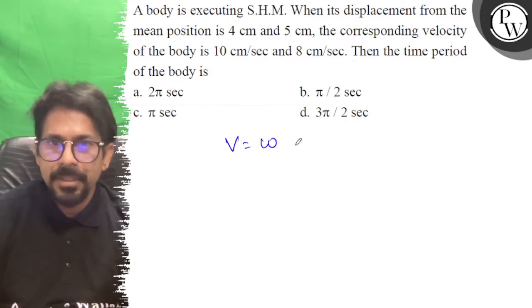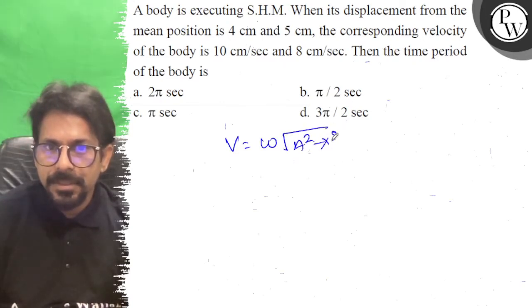We know v equals omega root of A squared minus x squared. We need to find the time period.